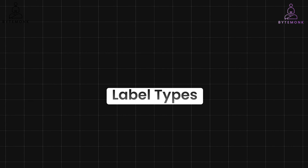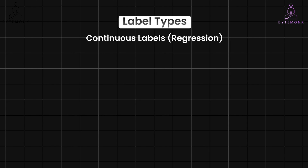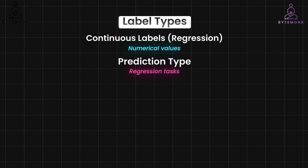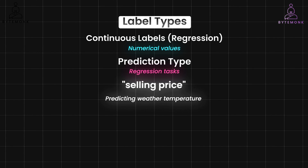The type of label you have significantly impacts the kind of predictions your model will make. Here is a breakdown of the two main types along with an additional one. Starting with continuous labels, or regression: these labels represent numerical values, allowing a continuous spectrum. Models trained with continuous labels are used for regression tasks and predict a value within a range rather than a specific category. In our real estate case, the selling price is a continuous label. Other examples include predicting weather temperature, forecasting stock prices, or estimating customer lifetime value.